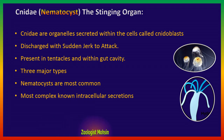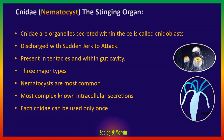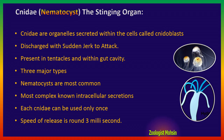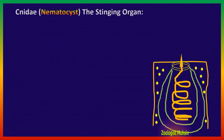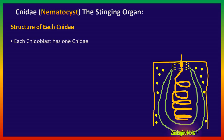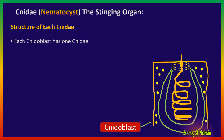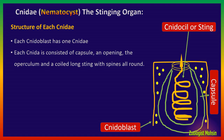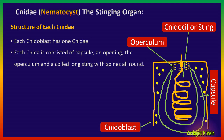No other cells contain such secretions. Each Cnidae can be used only once, and the speed of release is around three milliseconds — just imagine, incredibly fast. Now let's look at the structure of Cnidae. Each cnidoblast has one Cnidae — a rectangular outer covering with a cnidocyte or a coiled, spiral-shaped string inside. Each Cnidae consists of a capsule, an opening at the top called the operculum, and a string with spines all around. That is the basic structure of a Cnidae or cnidoblast.